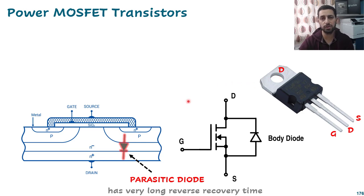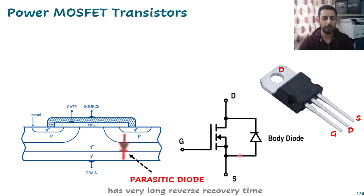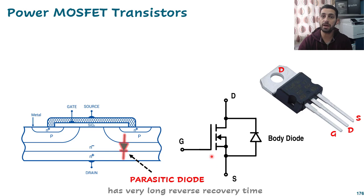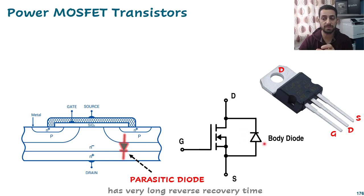Is there any problem with this parasitic body diode inside the MOSFET? The main problem is that it has a very long reverse recovery time. This means that if we switch off the MOSFET, that diode tries to pass current for a short period — the reverse recovery time — through the MOSFET, which can cause problems in some circuit configurations. To deal with this, an external diode with lower forward voltage and higher speed is sometimes added as a replacement.